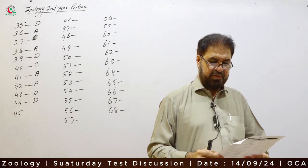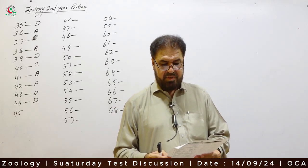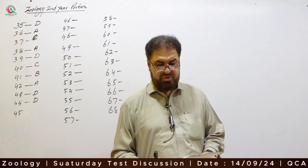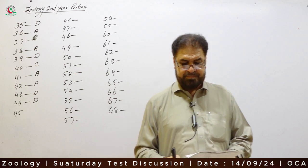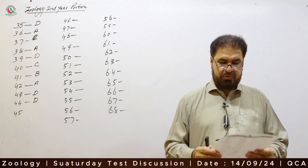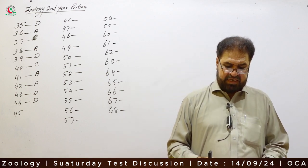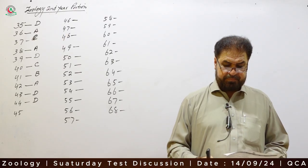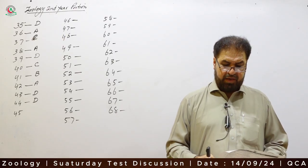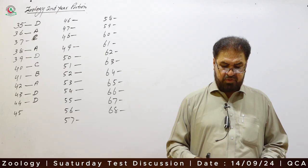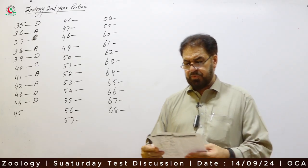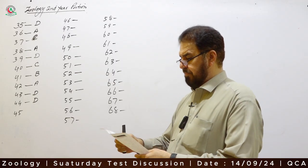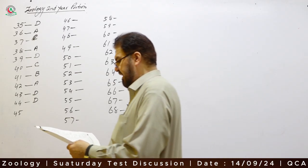Question 45: Which of the following have thick fiber and more cytoplasm? In neurons, axons are the thick fibers and they have more cytoplasm as compared to dendrites. Option B is correct.